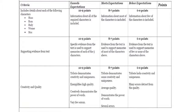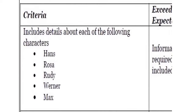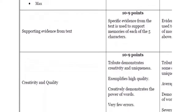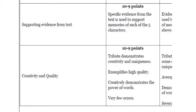Let's take a look at the rubric for this assignment. Because the grading criteria focuses on the goal of the assignment and not the format, we can use one rubric to evaluate a variety of assignments. The first criterion is to include details about each of the characters, and the characters are listed so students can check them off. The second criterion is including supporting evidence from the text - students need to provide specific evidence from the text to support memories of each of the five characters. The last criterion is creativity and quality, where I provide specific information outlining what must be included to earn full points. The assignment needs to demonstrate creativity and uniqueness, be high quality, and creatively demonstrate the power of words.